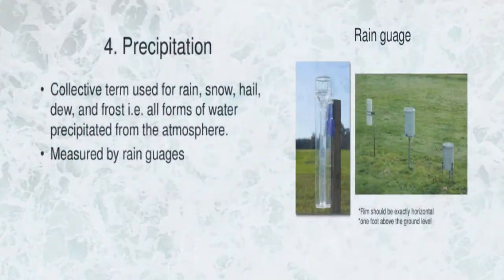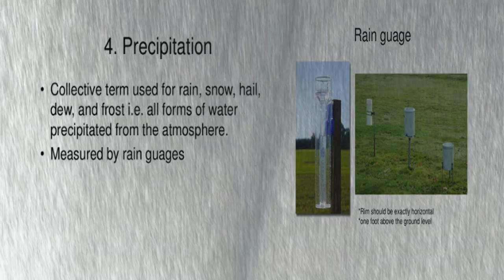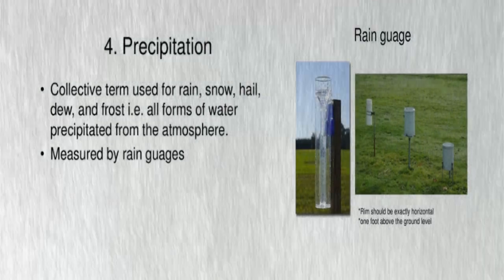Precipitation is the collective term used for rain, snow, hail, dew, or frost. All forms of water precipitate from the atmosphere, and it is mainly measured by a rain gauge. The rain gauge shown in the picture is the instrument which is used for this measurement.